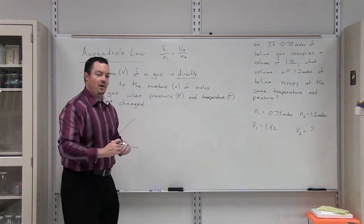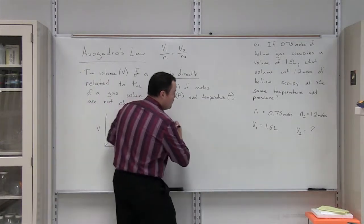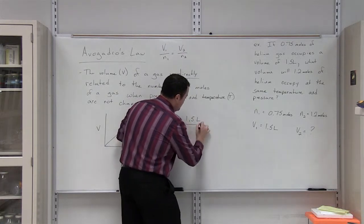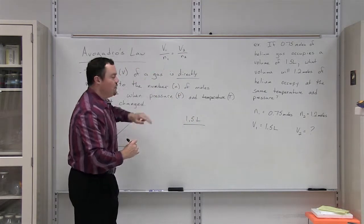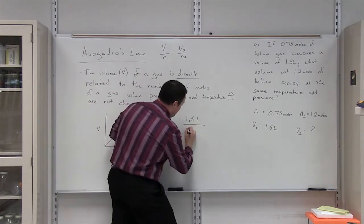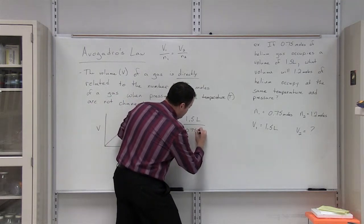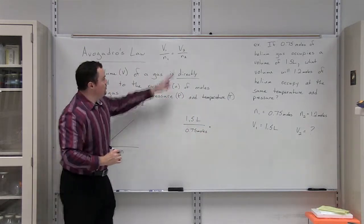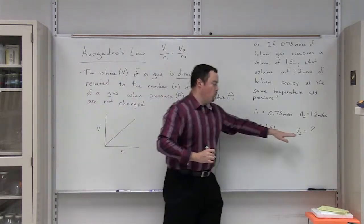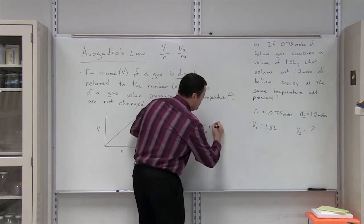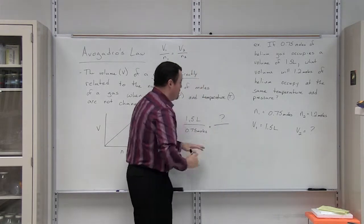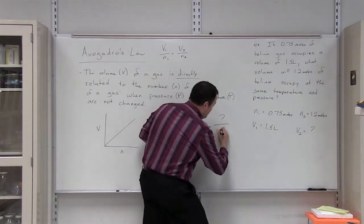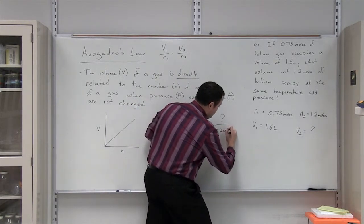What we are going to do is input our variables, V1, 1.5 liters, divided by N1, which is 0.75 moles. This is equal to V2, what we are trying to solve for, divided by N2, which is 1.2 moles.